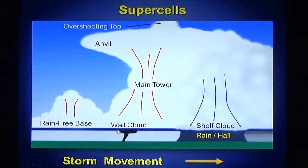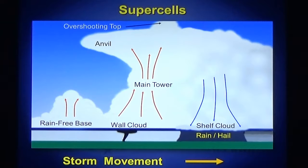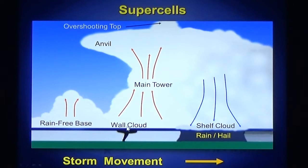Sometimes with a supercell, part of the rain-free base drops down to form the wall cloud. Sometimes a wall cloud will start rotating, and sometimes out of a rotating wall cloud you'll get a funnel cloud or a tornado. Just because you get a wall cloud does not mean you'll get a tornado. What's happening is that rain-cooled air is coming out of the thunderstorm and being sucked back into the storm, making an extension — a lowering — of the rain-free base into the wall cloud. The wall cloud marks where the air is flowing in and up into the thunderstorm: wall cloud — in and up; shelf cloud — down and out.